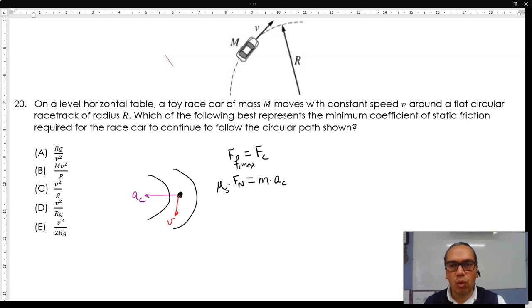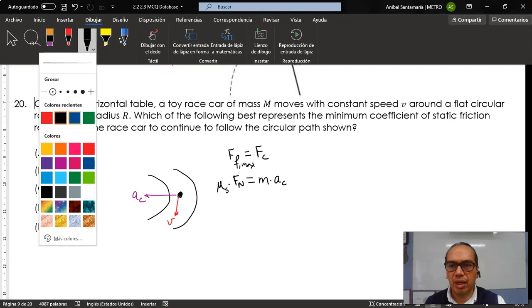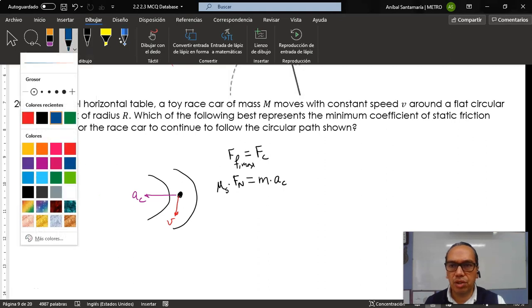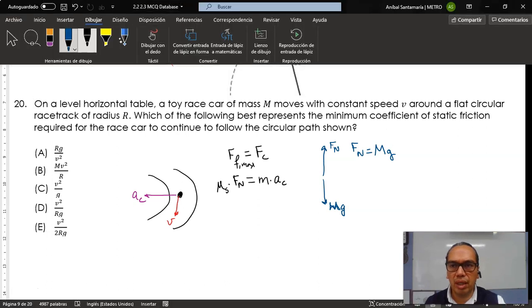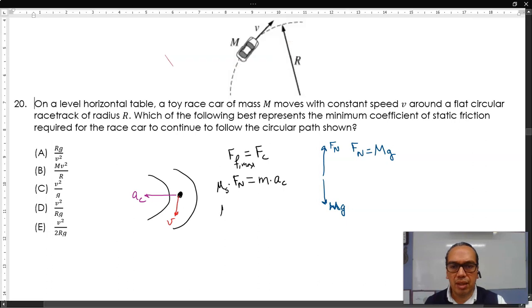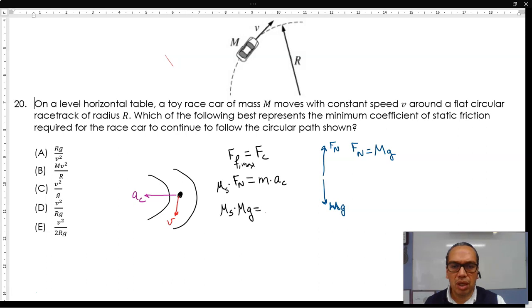Now, in the y direction, we do have equilibrium. So in the y direction, the only two forces that you have on this object are the normal force upward and the gravitational force downward. Therefore, the normal force must be equal to the gravitational force because there is no acceleration in the y direction, which means that you can substitute normal force with the gravitational force and that is equal to mass times centripetal acceleration.